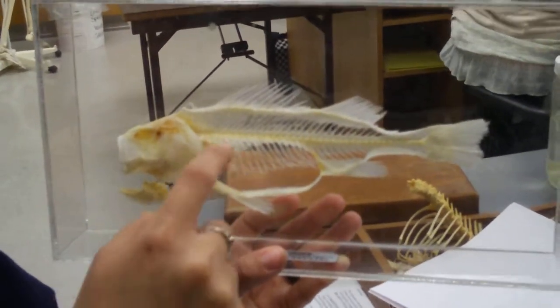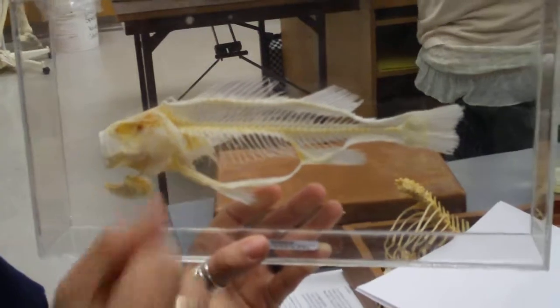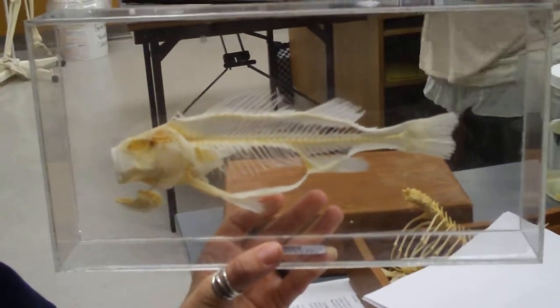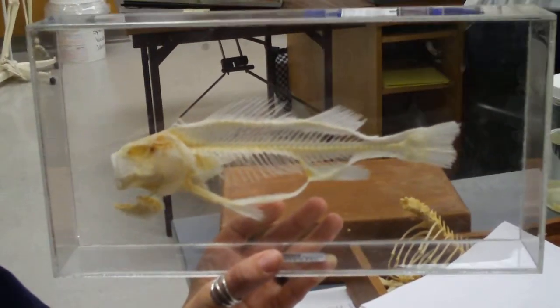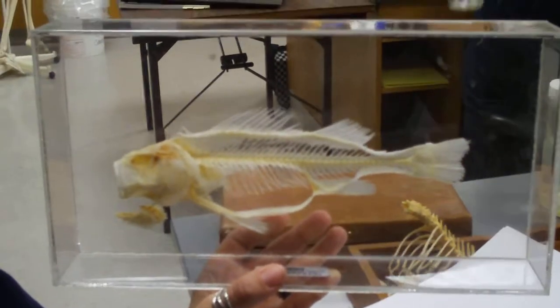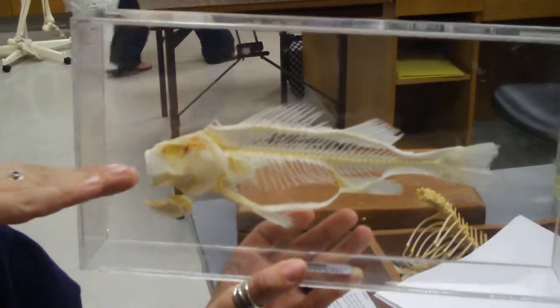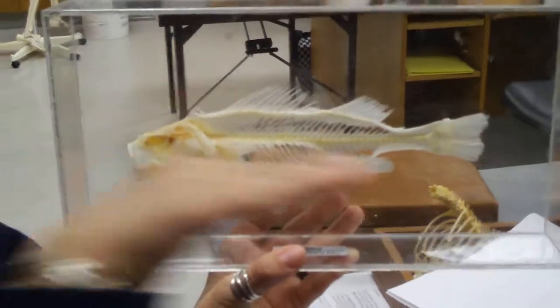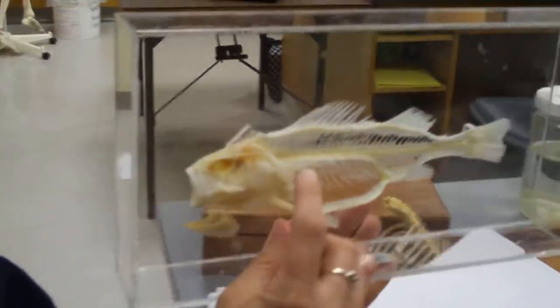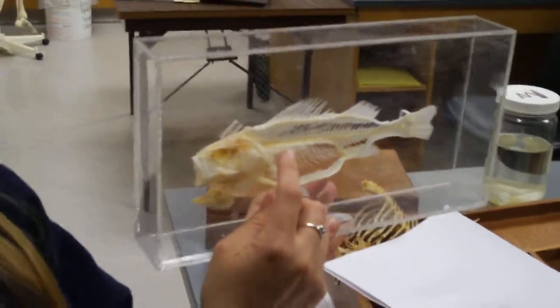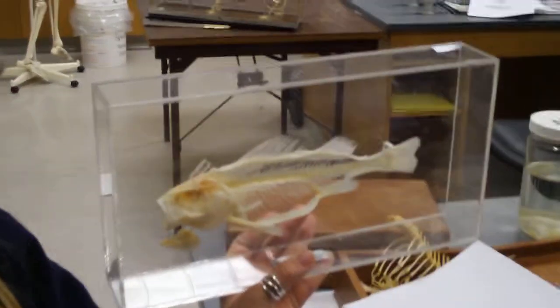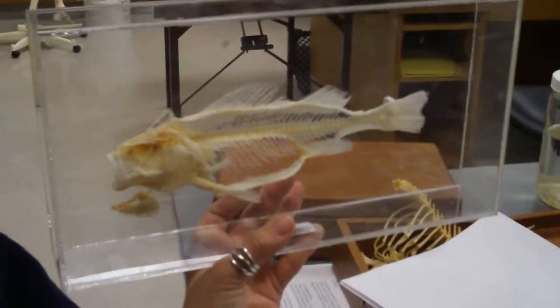And then you can see how there's ribs going down. The long ones, those are your pleural ribs or ventral ribs. Then you have like these little tiny thin ones that are kind of going more this way with the fish. Can you see those little tiny thin ones? Everybody see those? Those are your dorsal ribs or your epipleural ribs.